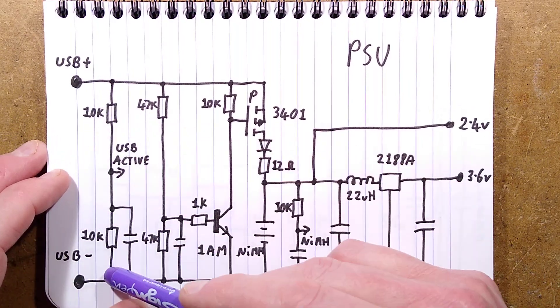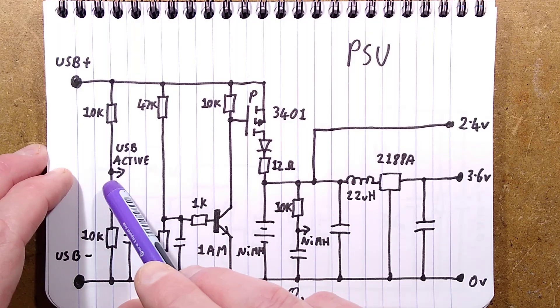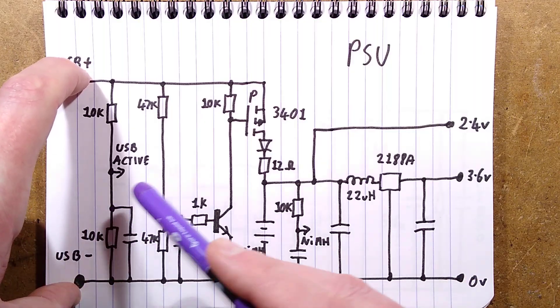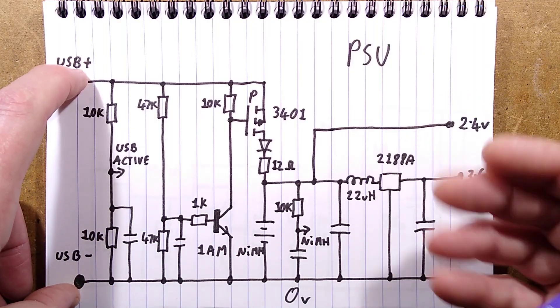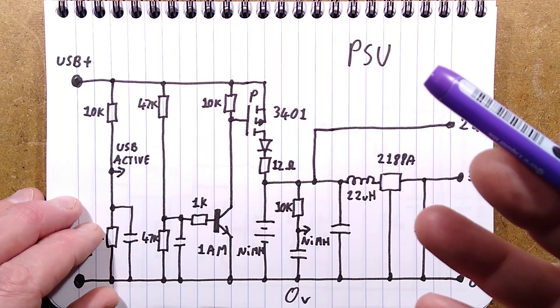But there is a voltage divider and a capacitor and then it's the USB active which goes over to the processor. And what that means is that when you plug in the USB to power this, to charge it, the processor knows that the USB has been plugged in.